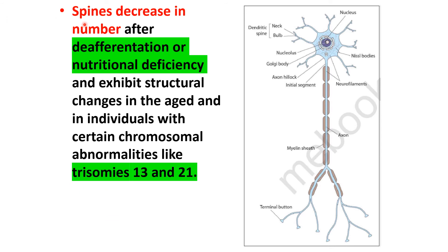Dendritic spines decrease in number after deafferentation or nutritional deficiency and exhibit structural changes. Structural changes in the spines are also seen with aging and in individuals with certain chromosomal abnormalities.